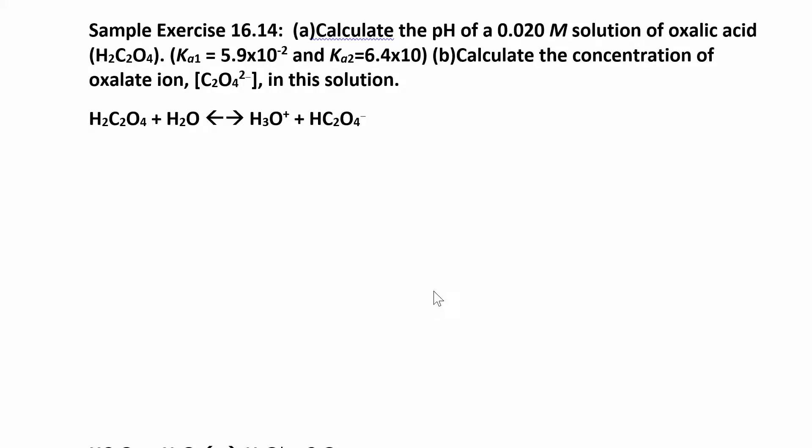Let's look at another polyprotic acid problem. In this one they want you to find the pH and calculate the concentration of that final ion. We're going to take this polyprotic acid - you know it's polyprotic because they give you two equations, two Ka values. We have our first ionization written here.